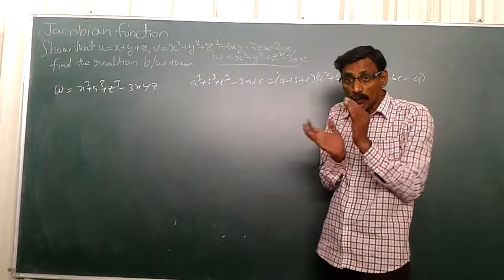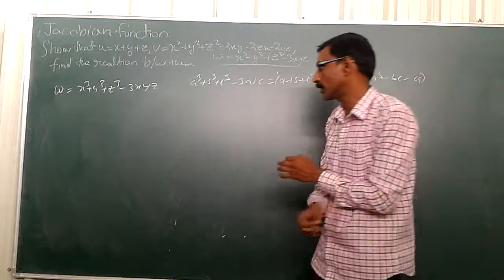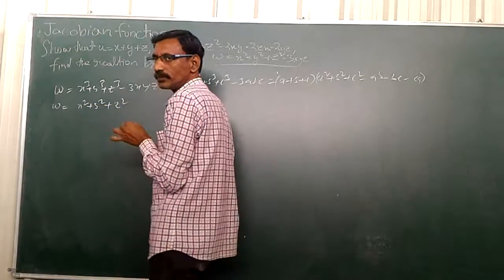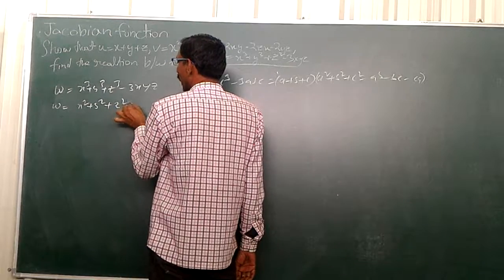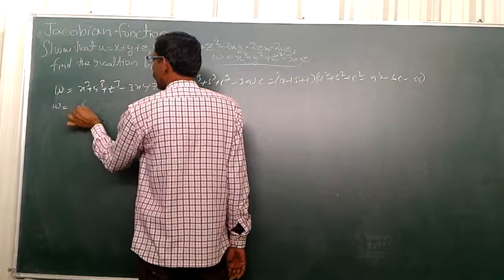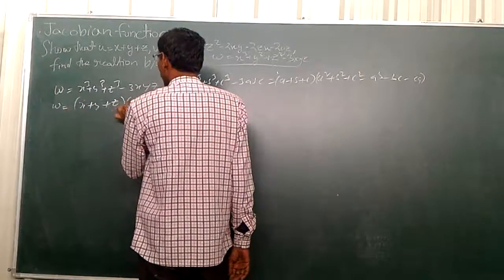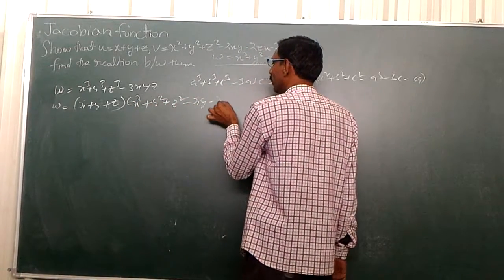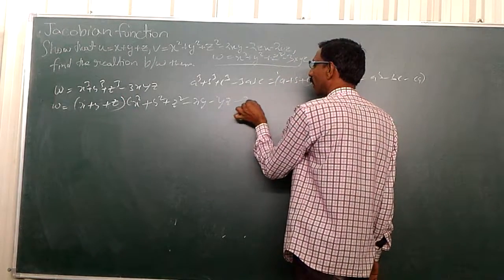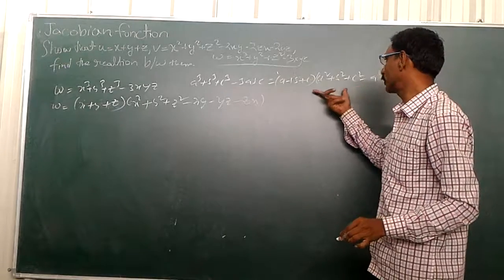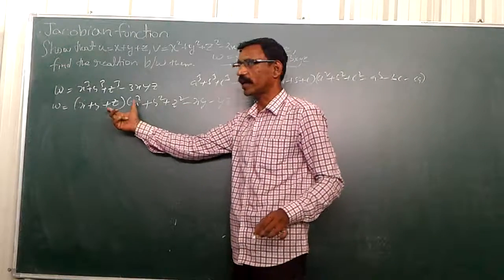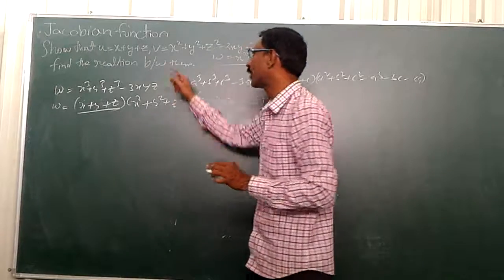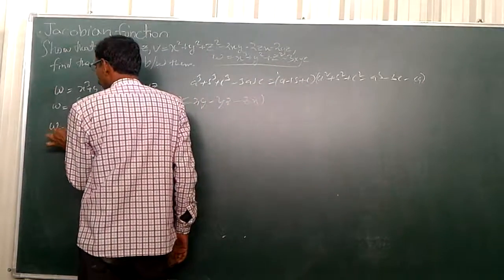I would like to use this identity to find a relation between u, v, and w. So I would like to write w is equal to x plus y plus z into x square plus y square plus z square minus xy minus yz minus zx. Here x plus y plus z is given by u.